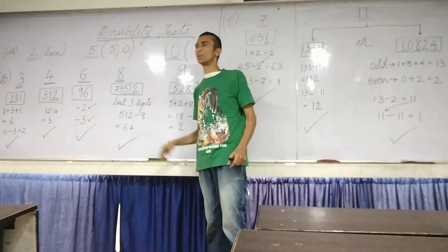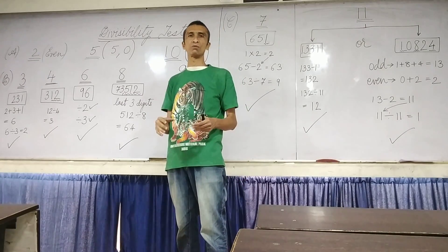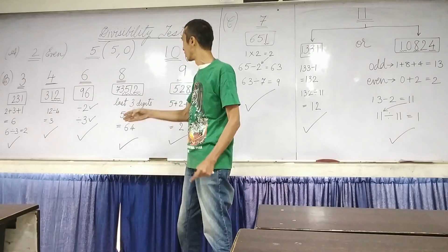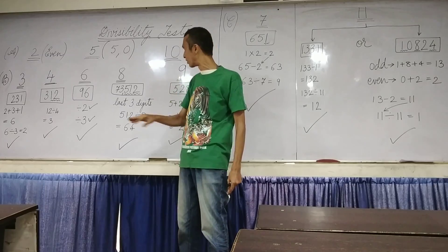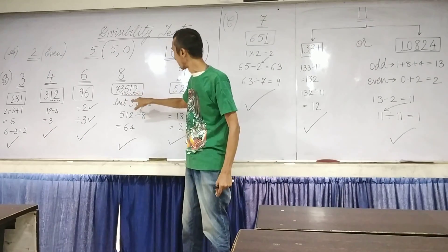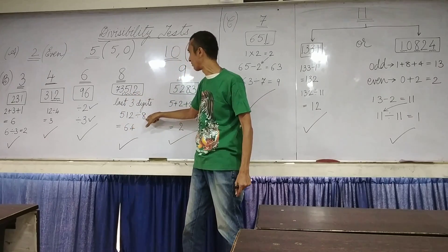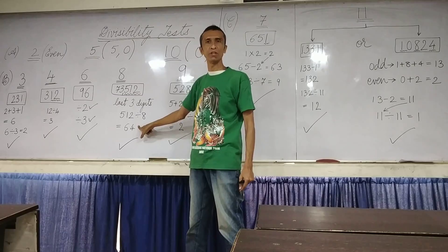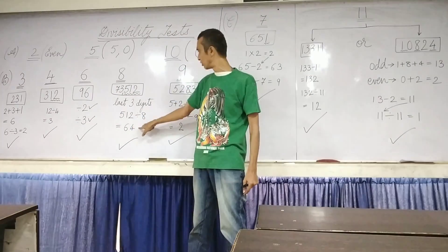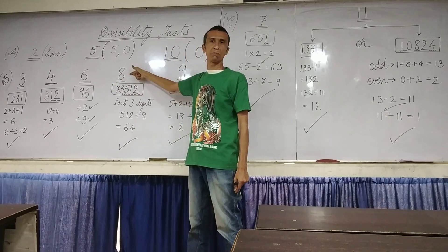8 especially, this test for 8 is only there if you have a digit which is more than 4 digit numbers. So here I have taken a 5 digit number. So what you do is, you take the last 3 digits over here. If the last 3 digits are divisible by 8, as you can see over here, 512 divided by 8, you get 64. So this whole number is divisible by 8.